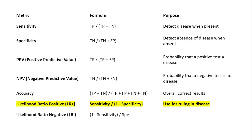The negative likelihood ratio, or LR-, is calculated as 1 minus sensitivity divided by specificity. It tells us how much the odds of the disease decrease when the test is negative.